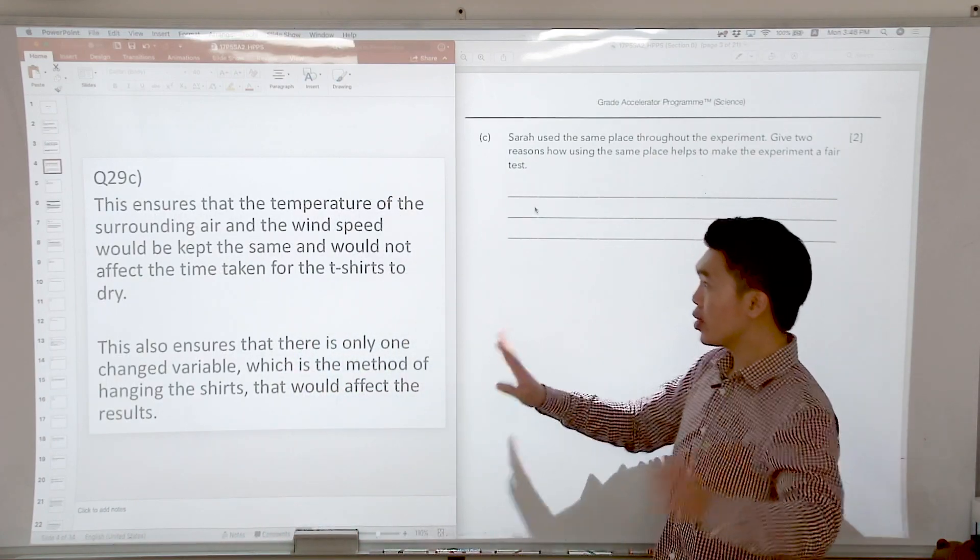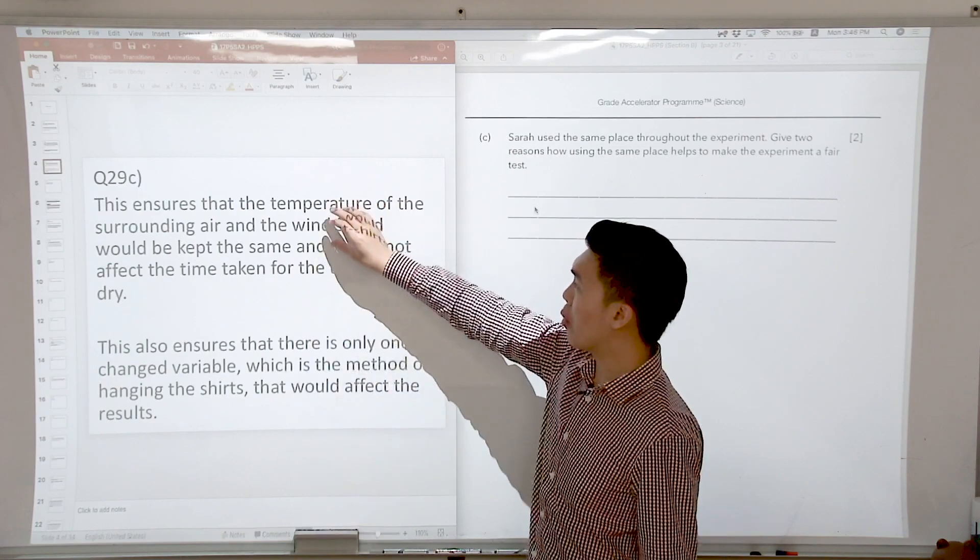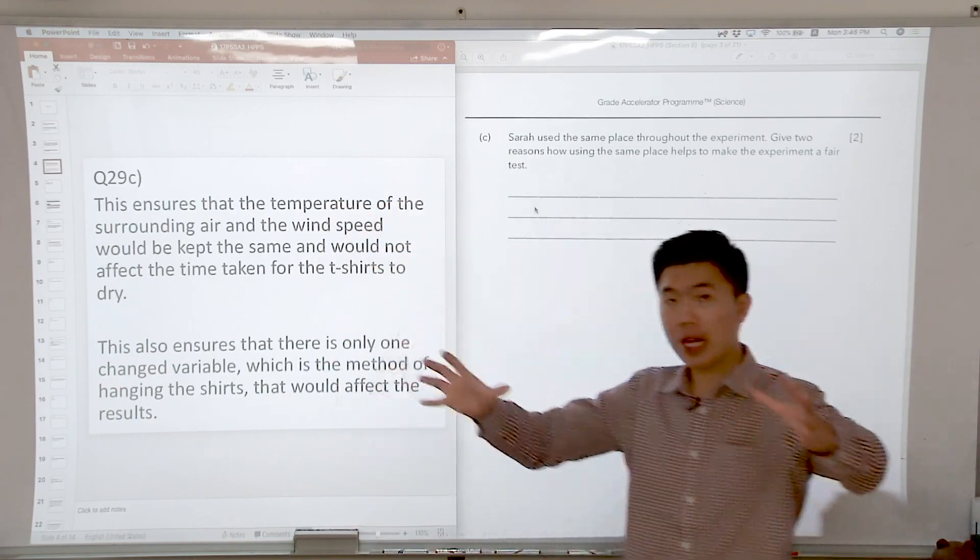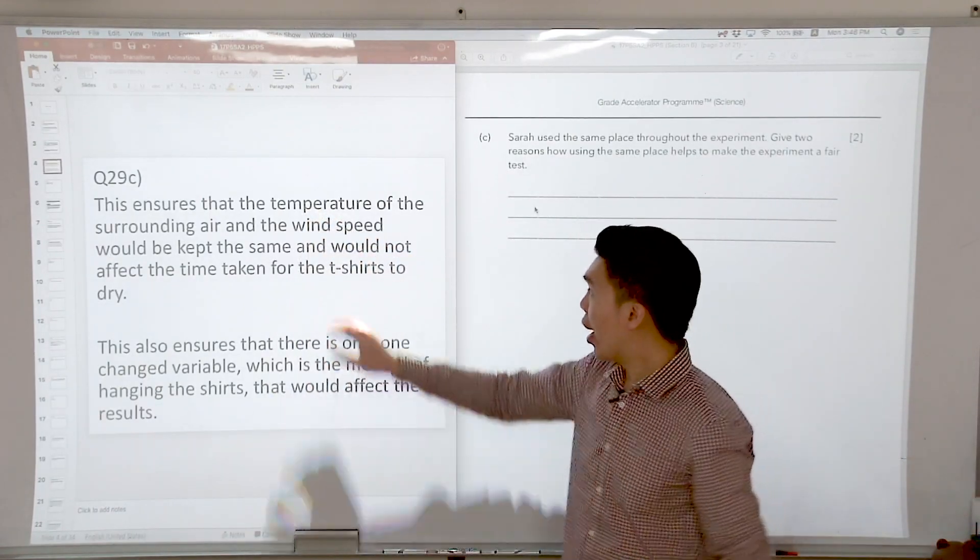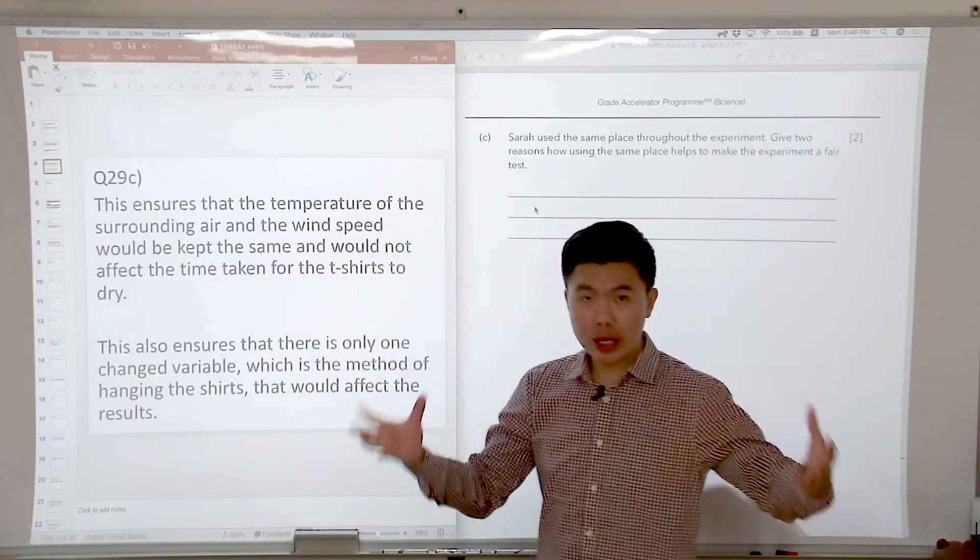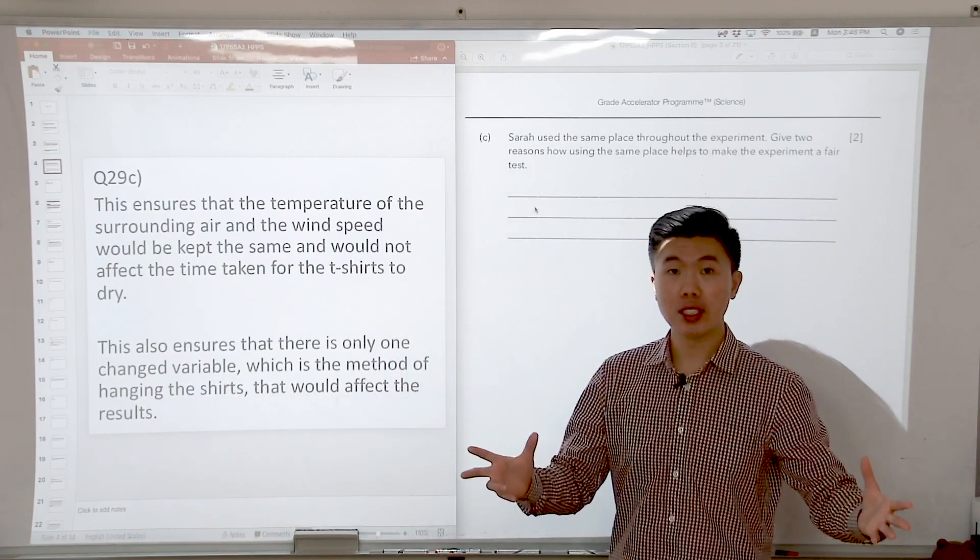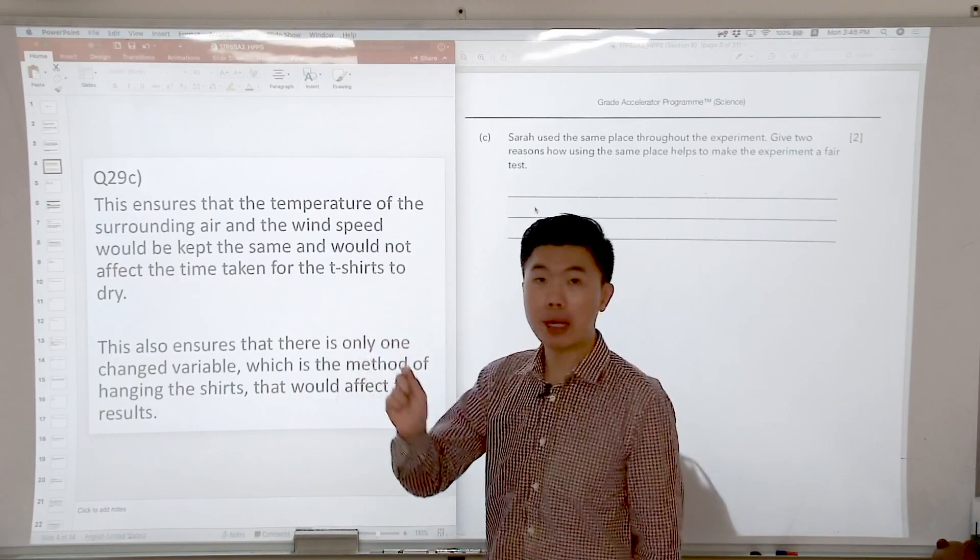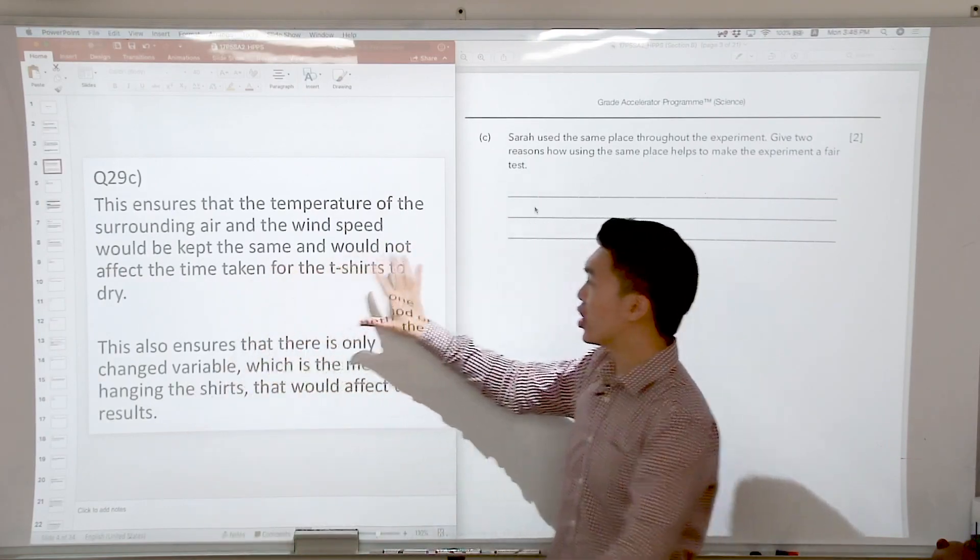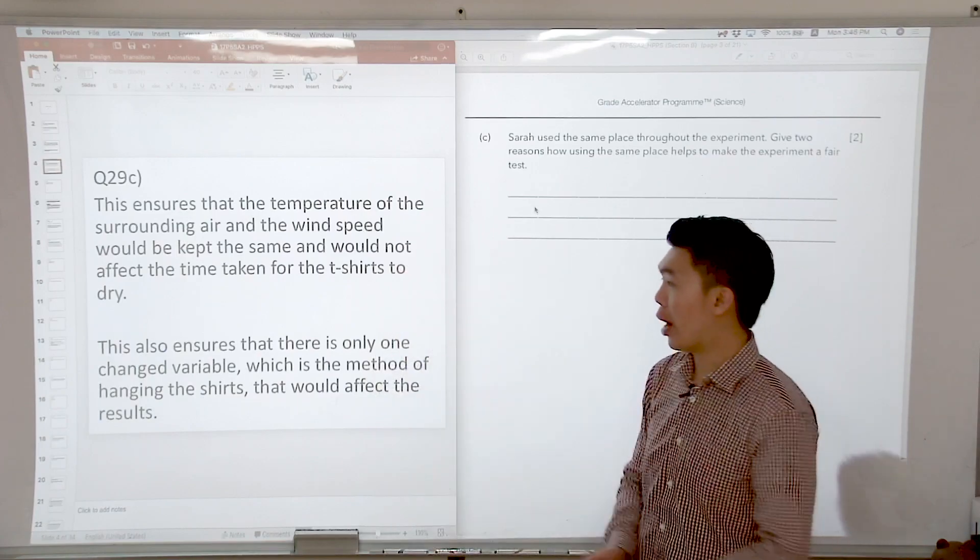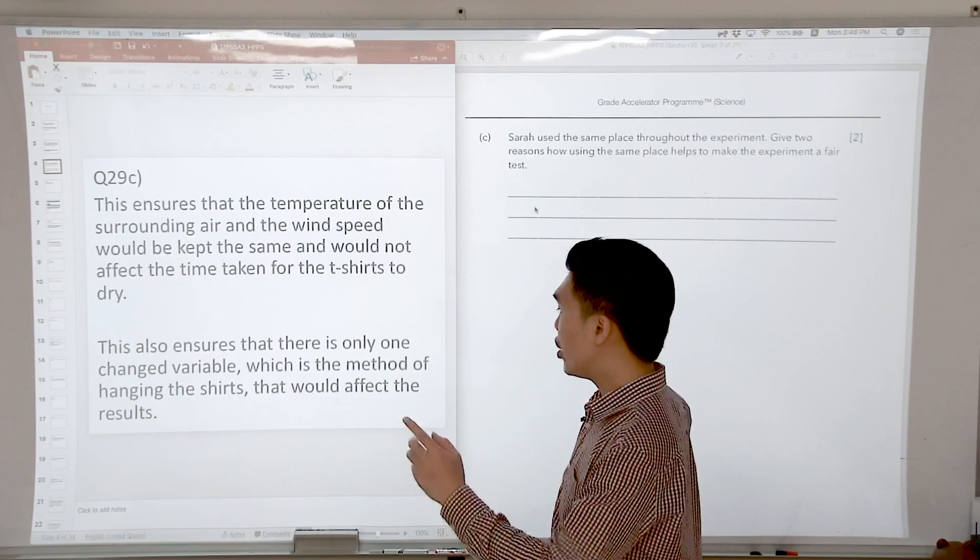So out of the four factors, we are going to talk about temperature and we are going to talk about presence of wind. So when you keep it in the same location, we ensure that the temperature of the surrounding air and the presence of wind or the wind speed would be kept the same and it would not affect the results. It is also important for us to specify what are the results. So it is the time taken for the t-shirts to dry.